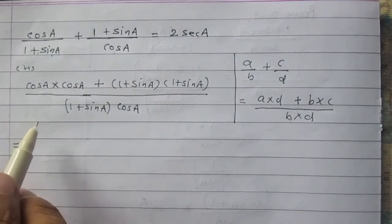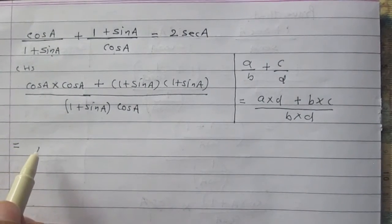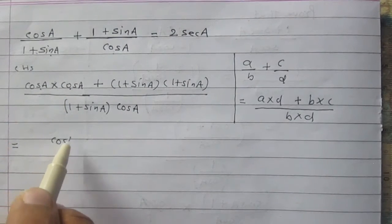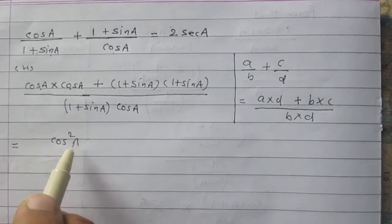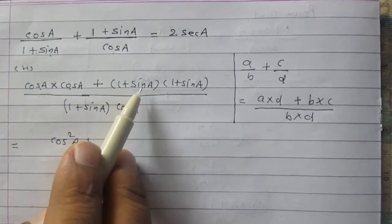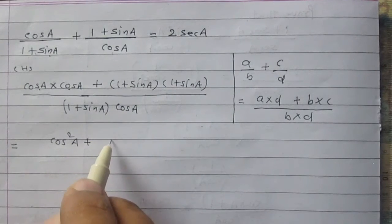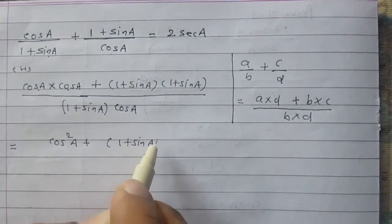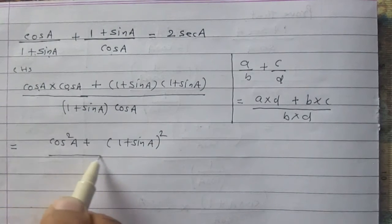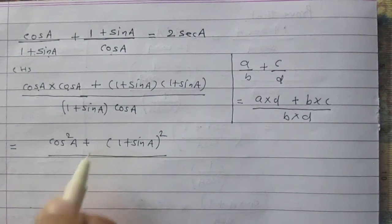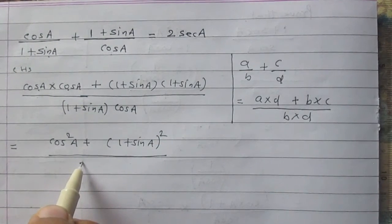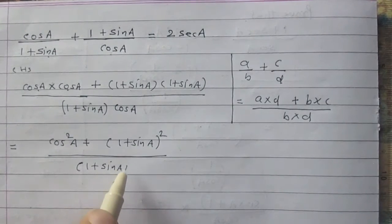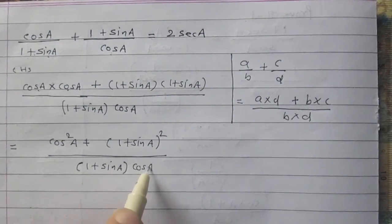We can simplify the left hand side: cos A multiplied by cos A is cos squared A. And 1 plus sin A multiplied by 1 plus sin A is 1 plus sin A whole squared. The denominator remains as it is: 1 plus sin A times cos A.